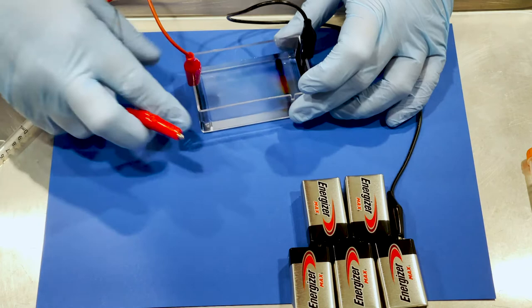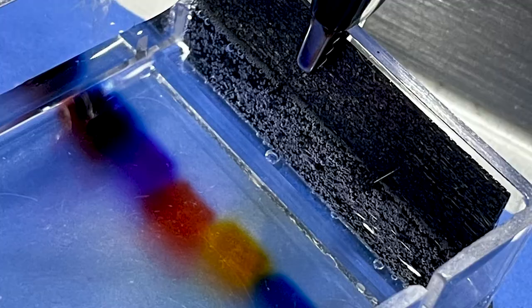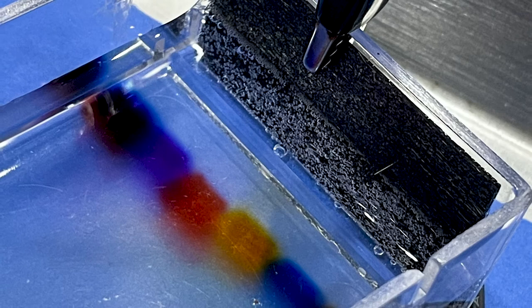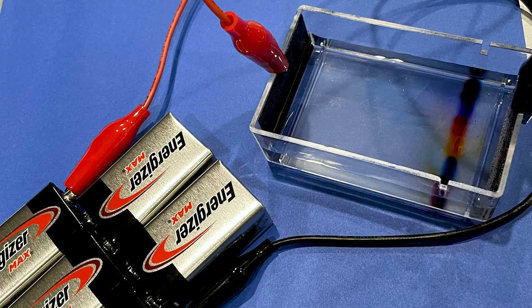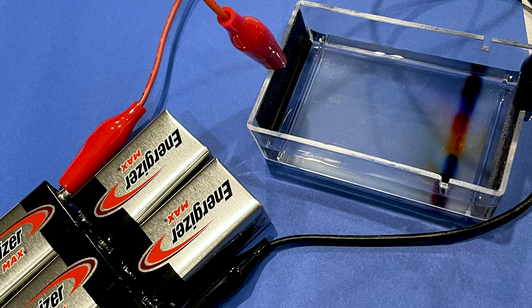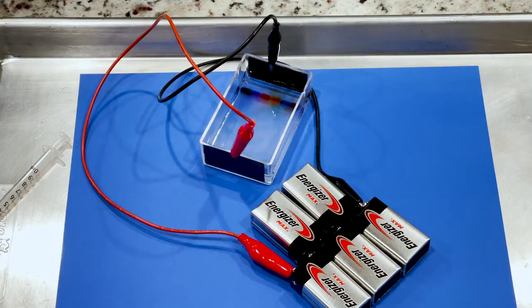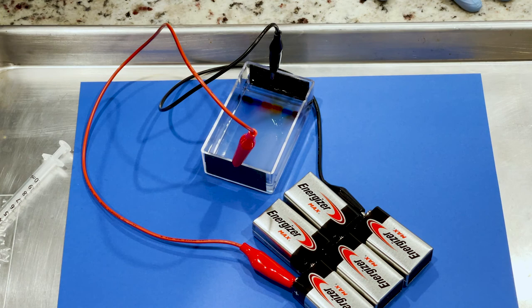You should notice bubbles start to form on the carbon fiber paper. The directions say it will take anywhere from an hour to three and a half hours for the dye to separate. Mine actually only took about 45 minutes with the five batteries. I recommend that you keep an eye on it and check it often because you want to stop the electricity when the farthest dye from the well is within maybe a centimeter of the end of the gel. You don't want the dyes to keep going because you don't want them to get pushed off the end. Once the dyes have separated out, make sure you take a picture of your gel right away because if you let it sit for a while the dyes will diffuse into the buffer and you won't be able to see your results.